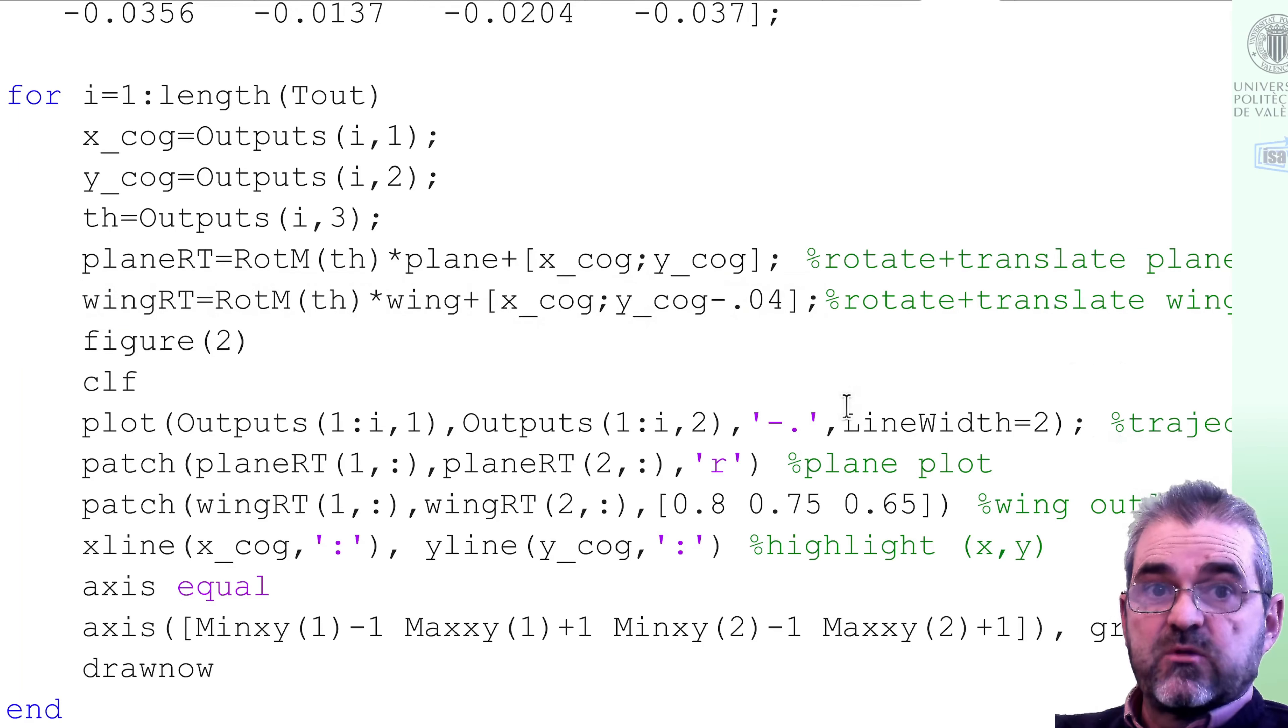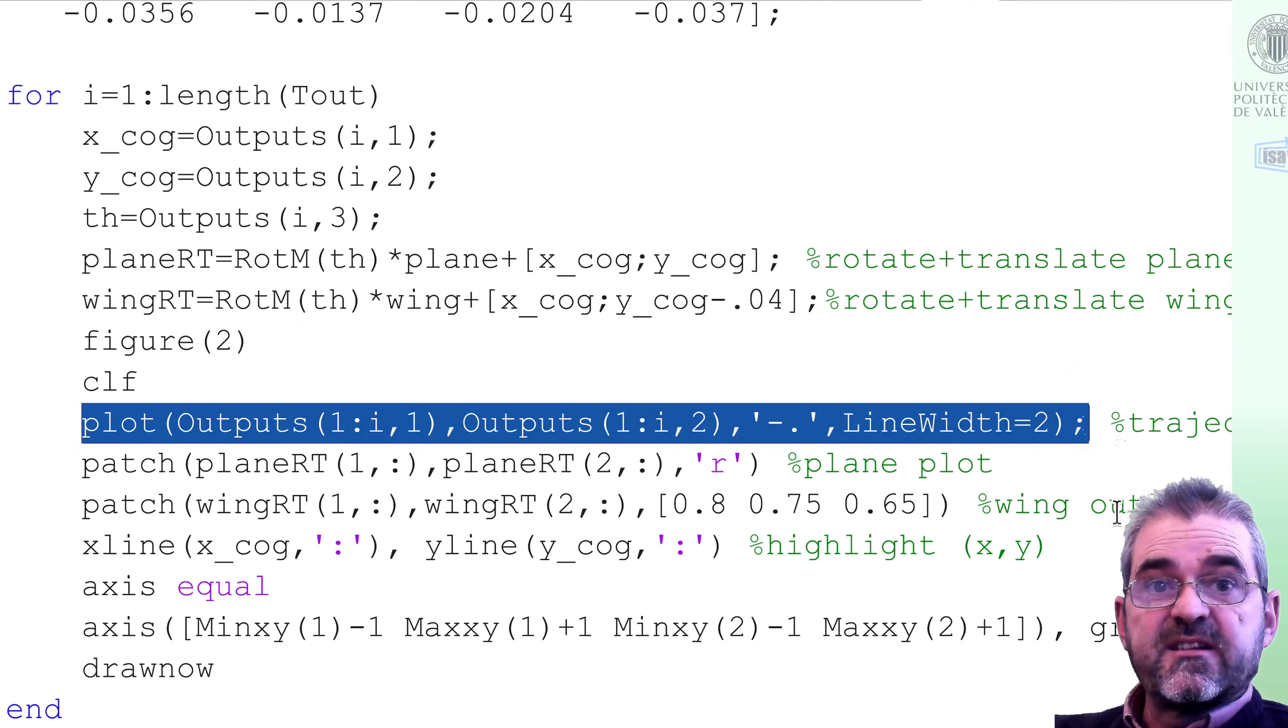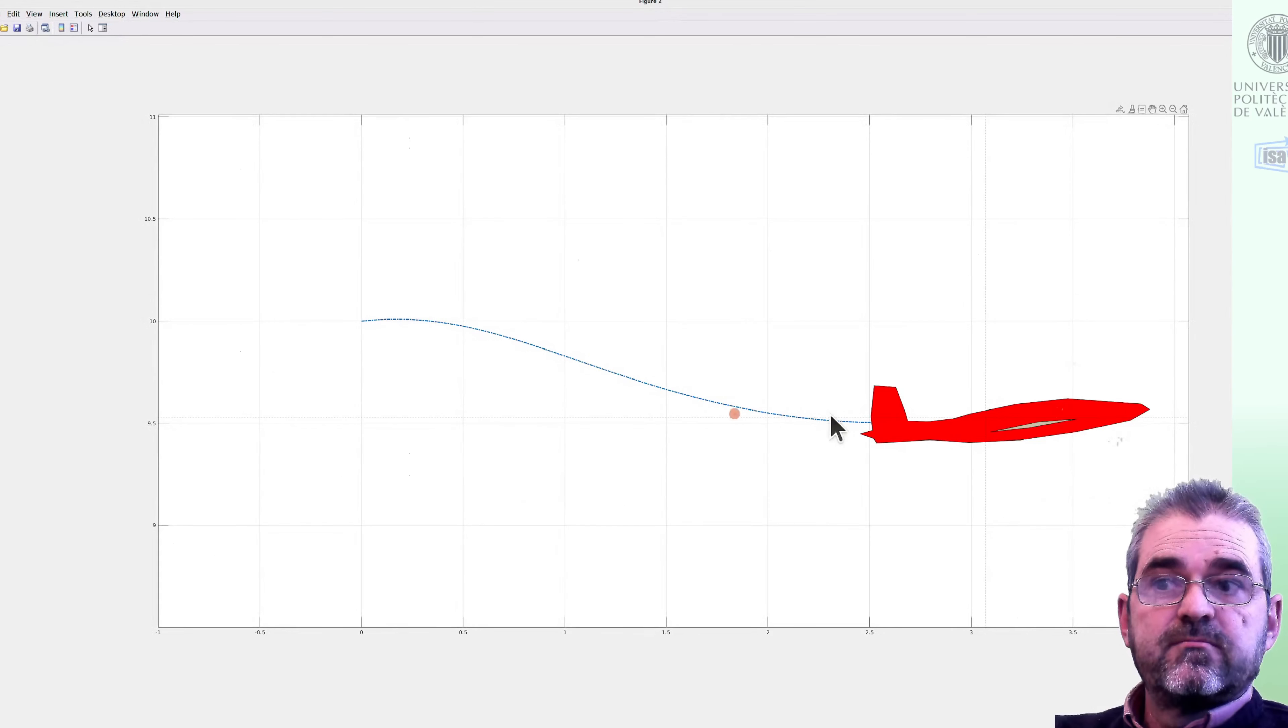Once we have the plane outline at the correct place and pitch angle, then we go to the figure we wish to draw onto. And with this plot, we plot the trajectory, this blue dashed line, for a better interpretation of what the plane is doing.